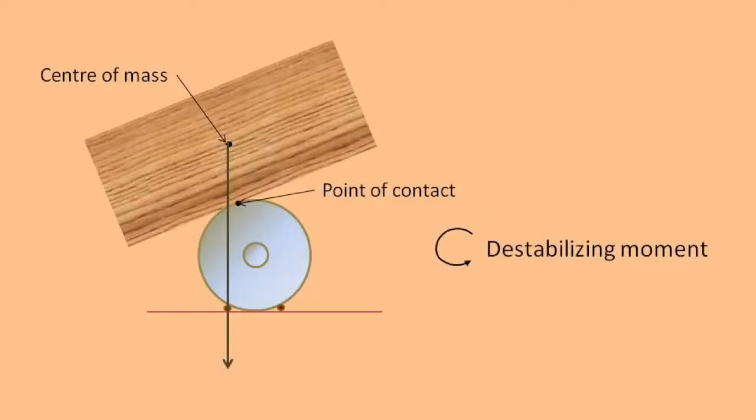This is unstable equilibrium and it happens because when we roll the wood around the support to the left, the center of mass is now to the left of the point of contact, which causes a moment trying to push the wood off rather than back to an equilibrium position.